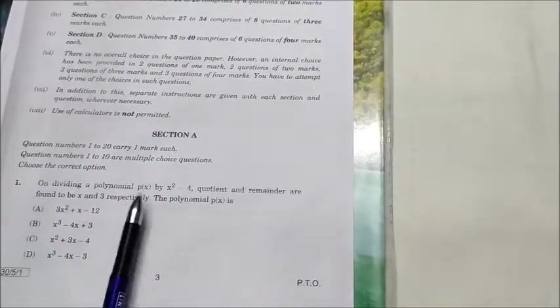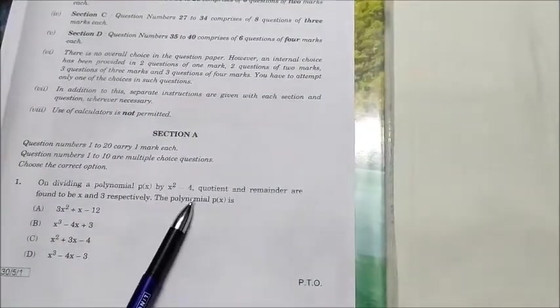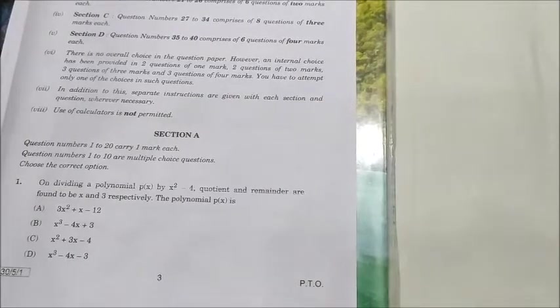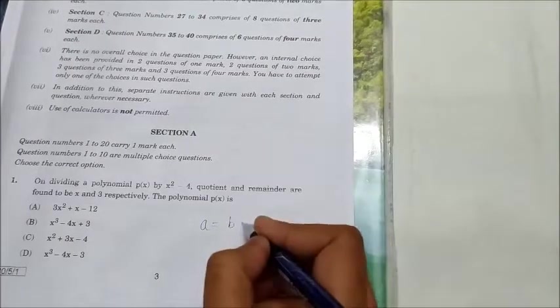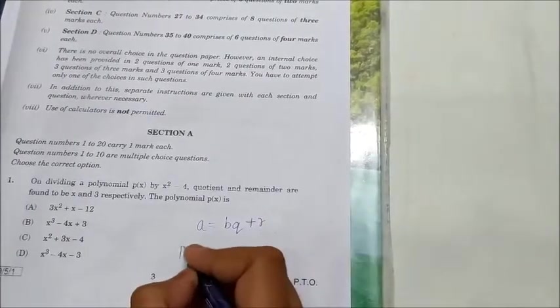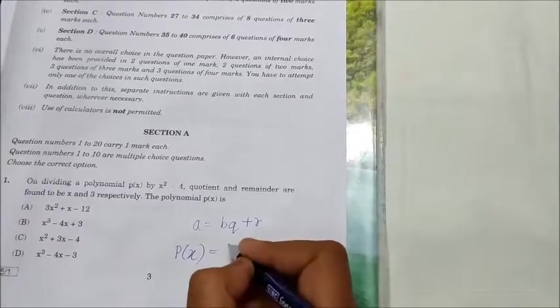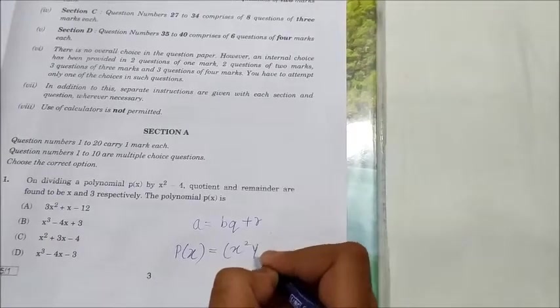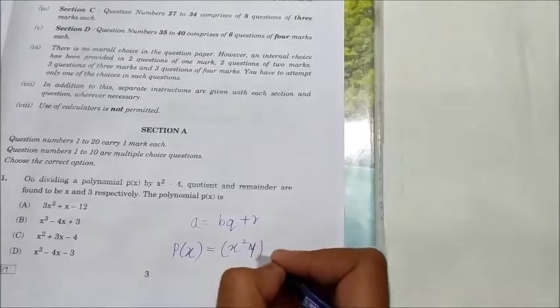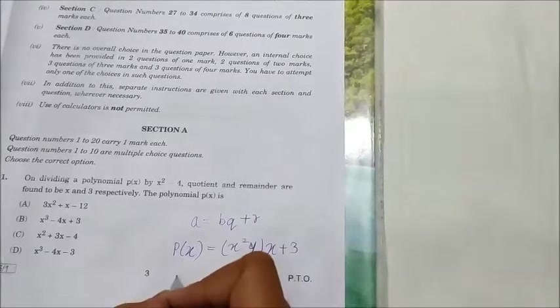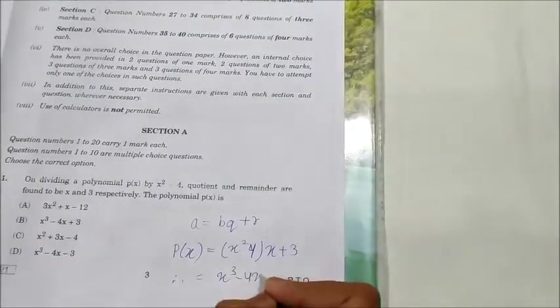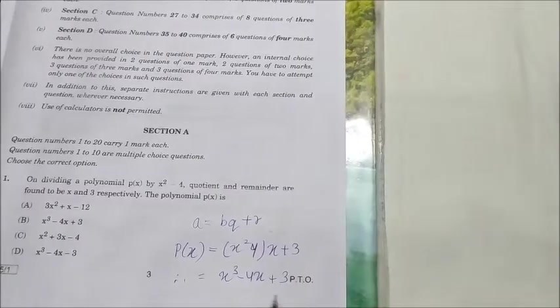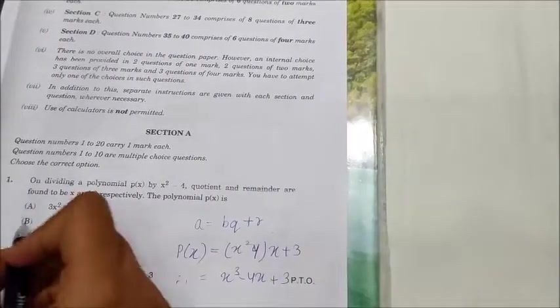Question number 1 is on dividing a polynomial P(x) by x² - 4. Quotient and remainder are found to be x and 3 respectively. The polynomial P(x) is... So we know that a = bq + r. So P(x) = (x² - 4) × x + 3. Therefore it will give x³ - 4x + 3, and we have this in the options, that is option B. So option B is the correct answer.